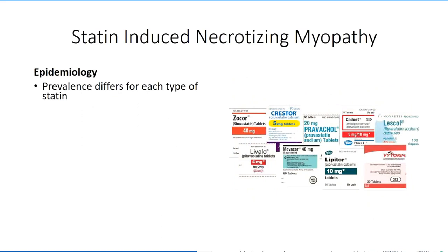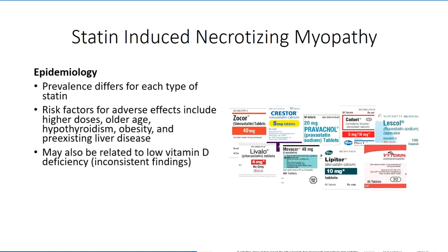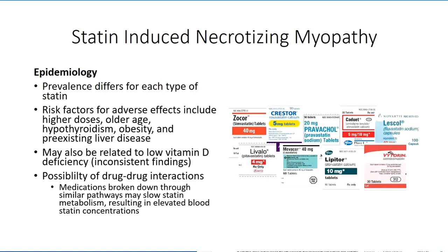The prevalence of statin-induced necrotizing myopathy is also dependent on the precise prescription. Some forms of the medication carry a higher risk of the complication than others, and an understanding of the relative risks for each commercial brand should be factored in when making a decision regarding the type of prescription to give. Consideration should also be given to other factors including age, dosage, and the presence of certain comorbidities. There is also a risk associated with certain drug-drug interactions, as medications that compete with statin for cellular uptake or metabolism are likely to result in increased plasma statin levels above what is anticipated.